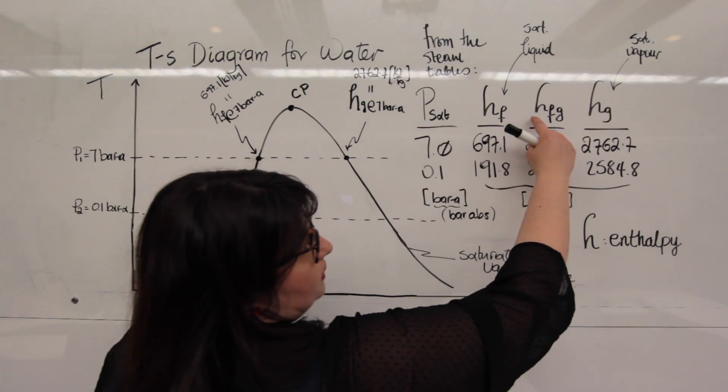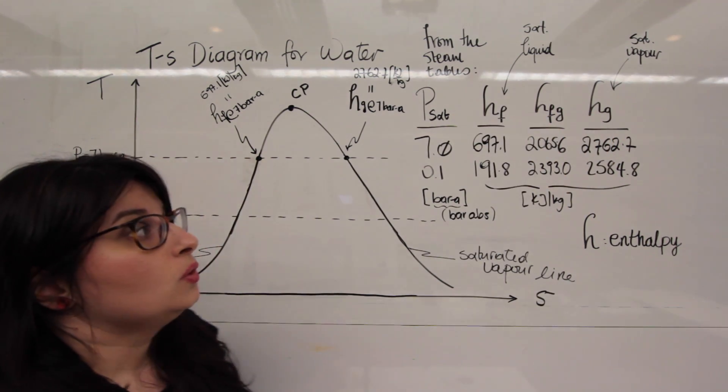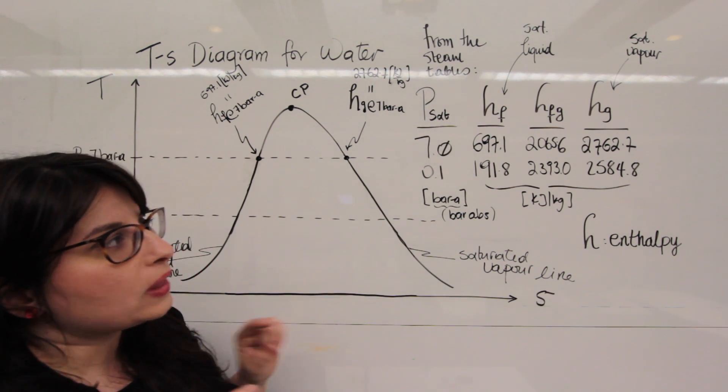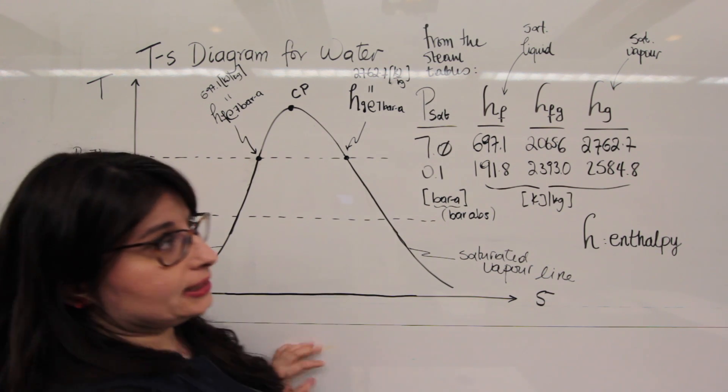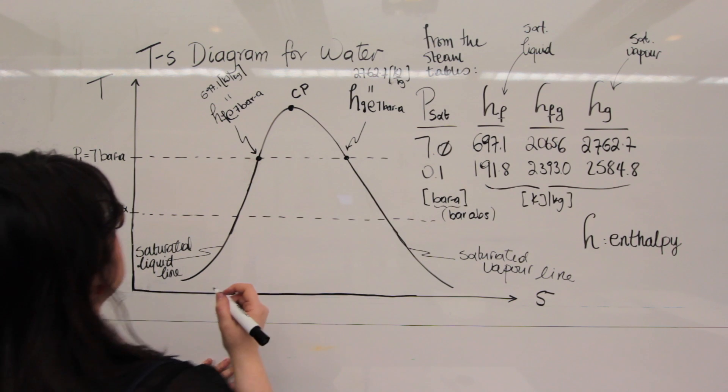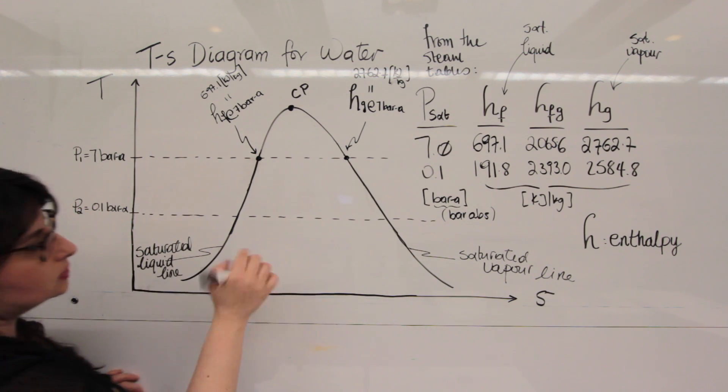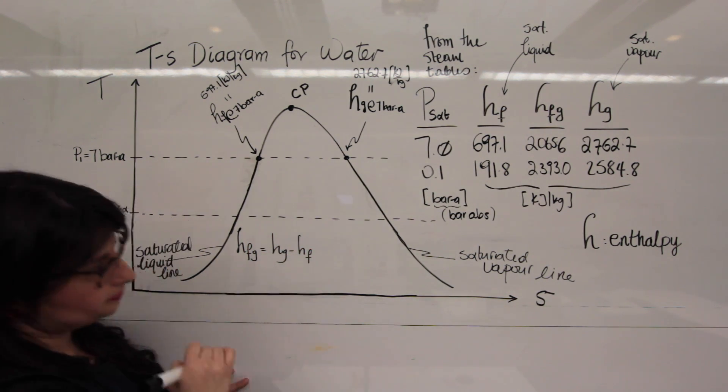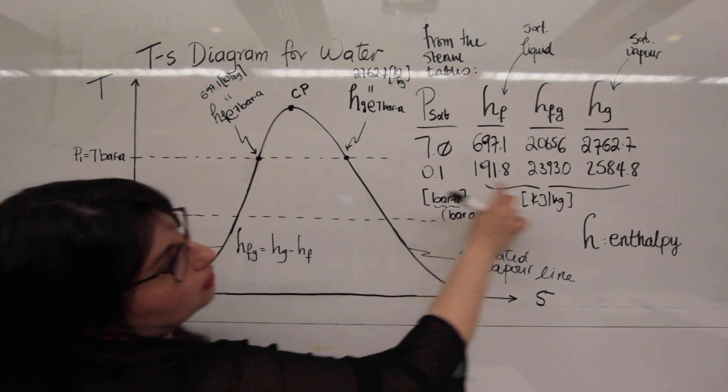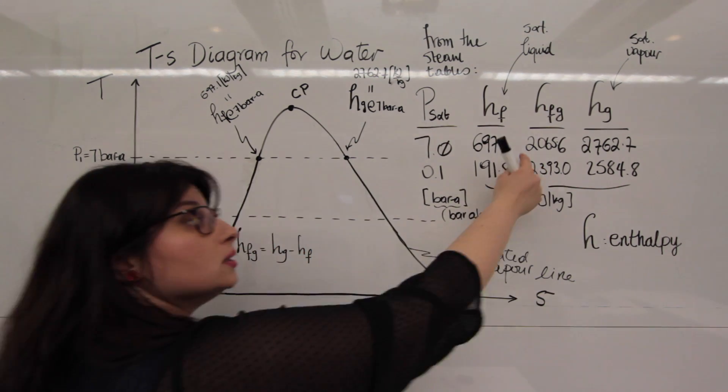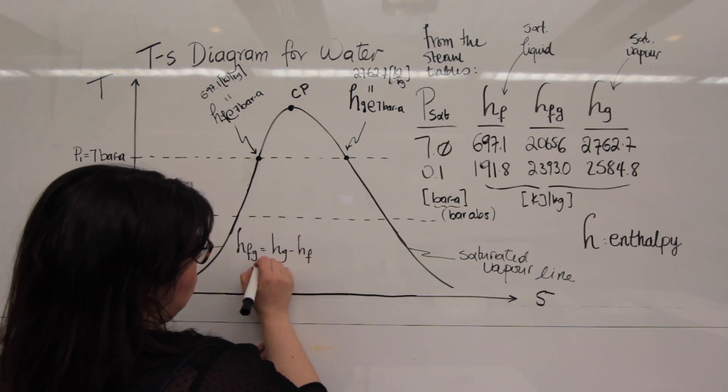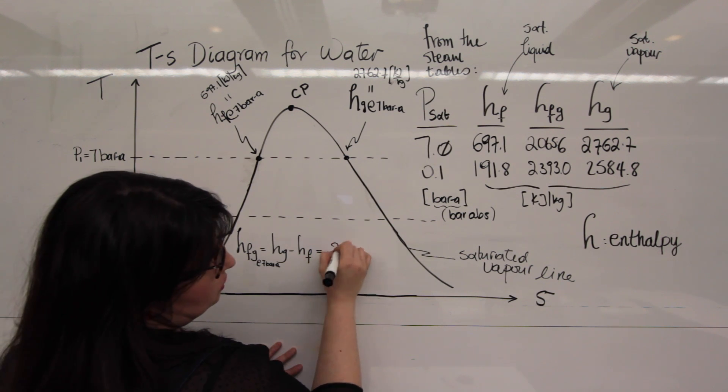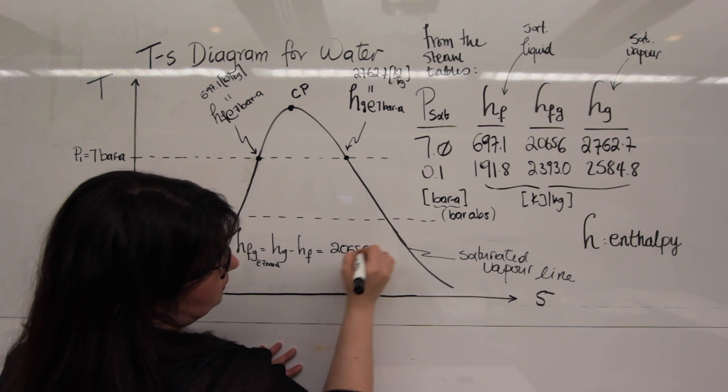All right. Well, what about this? Right? You have the line in between the two. You'll typically find this in the same tables. In the workbook that I gave you for the class, that was not in there. Well, it's because you can very easily calculate it. In fact, let's see, we have some space here. I'll just write down here. HFG is equal to HG minus HF. So whether you want to take 2762.7 minus 697.1, or look at the value directly, this, if we're talking about 7 bar absolute pressure, HFG would be 2065.6 kilojoules per kilogram.